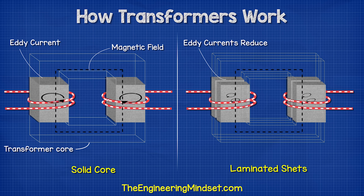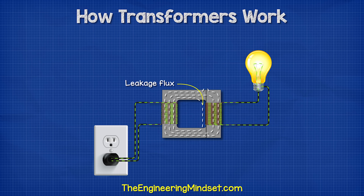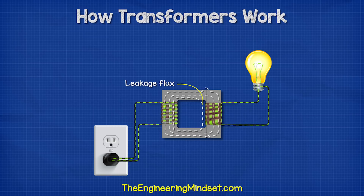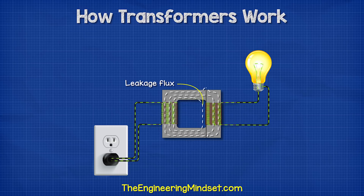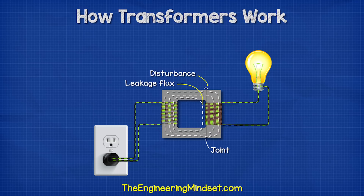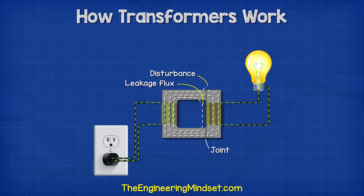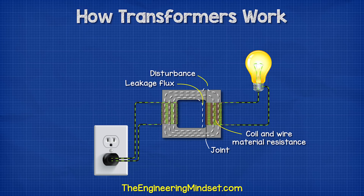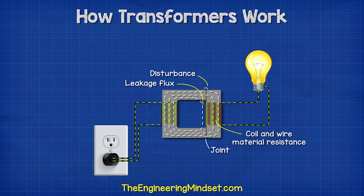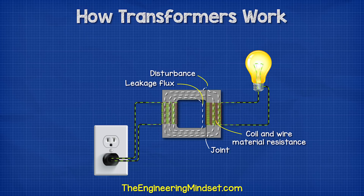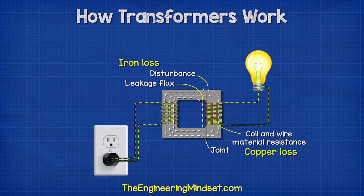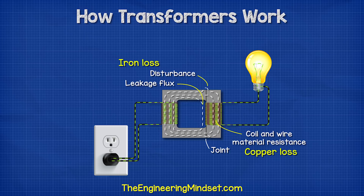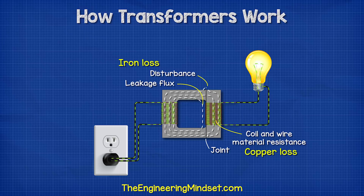Although we will still lose some of the magnetic field due to leakage flux, and we also get some losses due to the disturbances caused at the joints. We also lose energy in the wire and the coils because they will always have some resistance, and this generates heat. So in a transformer, we have copper losses as well as iron losses.